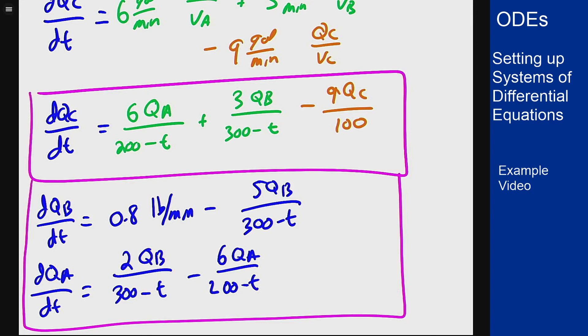That's the idea of how you can use a diagram to model how water flows around and build this system of equations, which one could then solve to figure out what happens over time for these three tanks and their salt content.